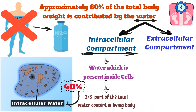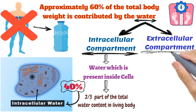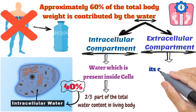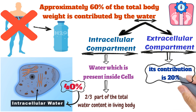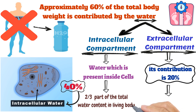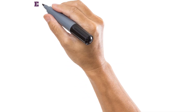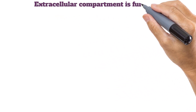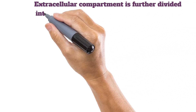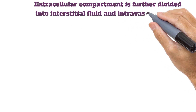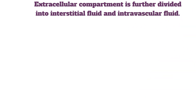The other part, that is the extracellular compartment, contributes 20%, or one-third of the total water content in the human body. This extracellular compartment is further divided into interstitial fluid and intravascular fluid.